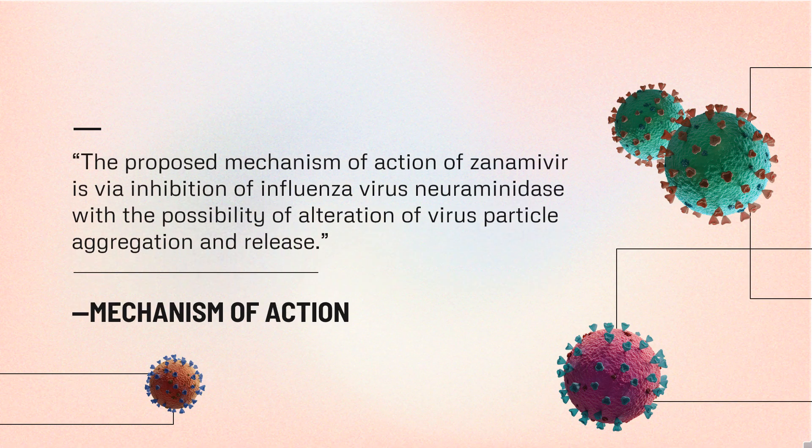Mechanism of Action. The proposed mechanism of action of Zanamivir is via inhibition of influenza virus neuraminidase, with the possibility of alteration of virus particle aggregation and release. By binding and inhibiting the neuraminidase protein, the drug renders the influenza virus unable to escape its host cell and infect others.